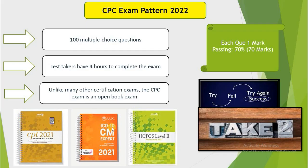So the updated CPC exam pattern 2022, effective from January: the number of questions will be 100 only. Initially it was 150, now it's 100 multiple choice questions. Test takers have four hours to complete the exam. Unlike many other certification exams, the AAPC exam is an open book exam, meaning you can use the CPT book, ICD-CM book, and HCPCS book as usual.